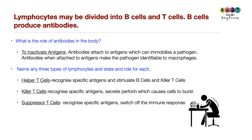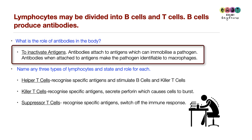Lymphocytes are divided into B cells and T cells. B cells produce antibodies, whose role is to inactivate antigens. Antibodies attach to antigens, which can immobilise a pathogen and make antigens more identifiable to macrophages.